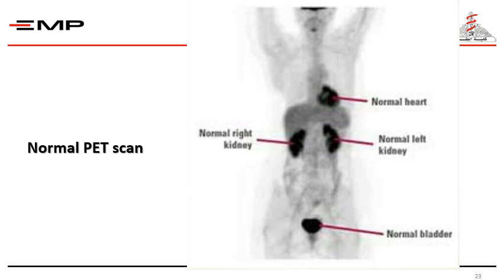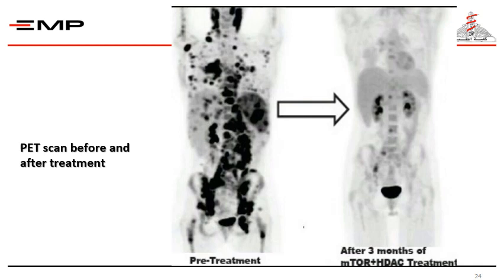This is a normal PET scan showing uptake in the heart, the kidneys, and the blood. This is a PET scan before and after treatment. Before treatment, there is multiple uptake of the radiolabeled material. After chemotherapy, there is no more uptake.